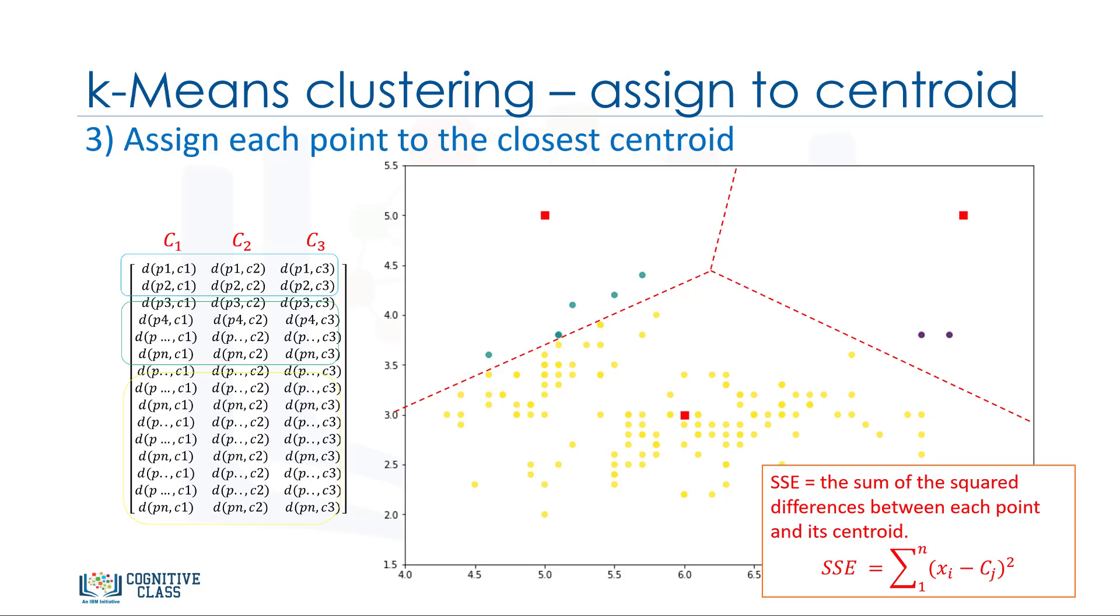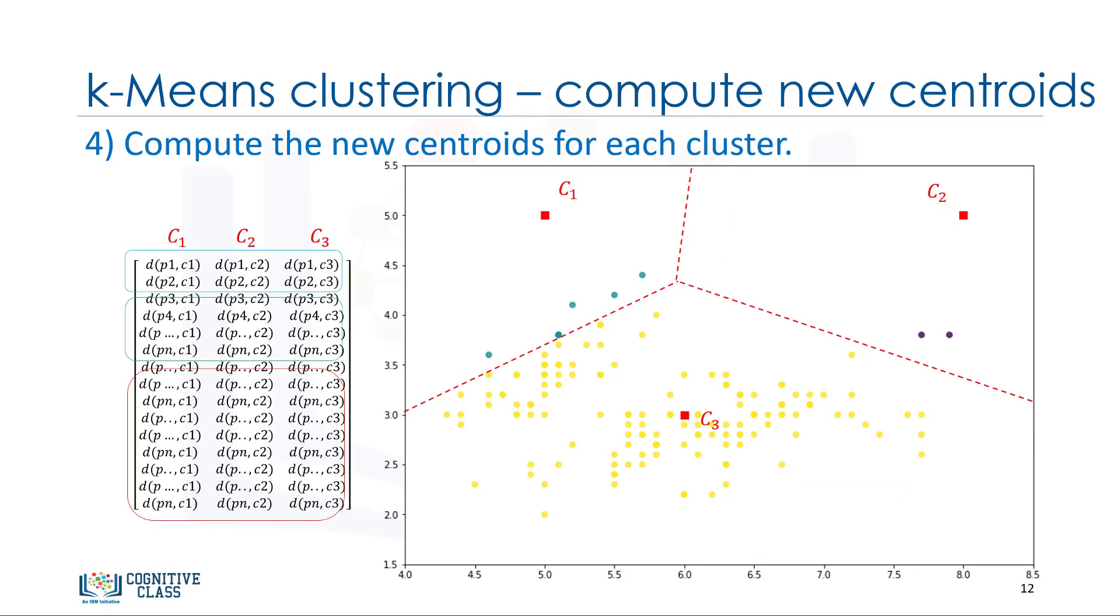Intuitively, we try to reduce this error. It means we should shape clusters in such a way that the total distance of all members of a cluster from its centroid be minimized. Now, the question is, how can we turn it into better clusters, with less error? Okay, we move centroids.